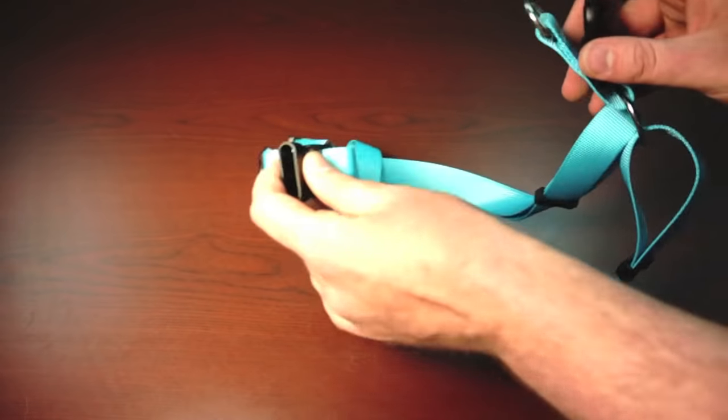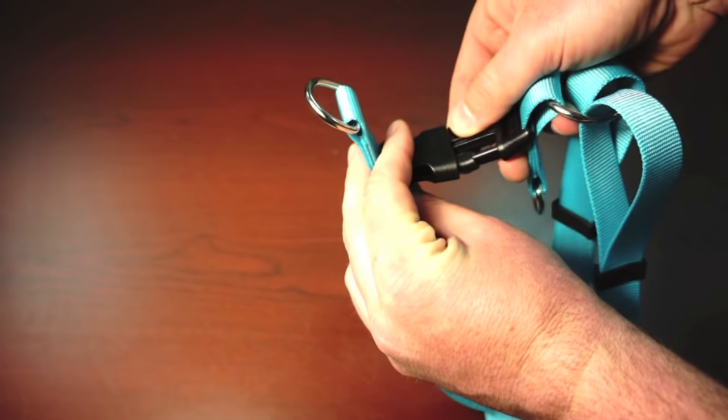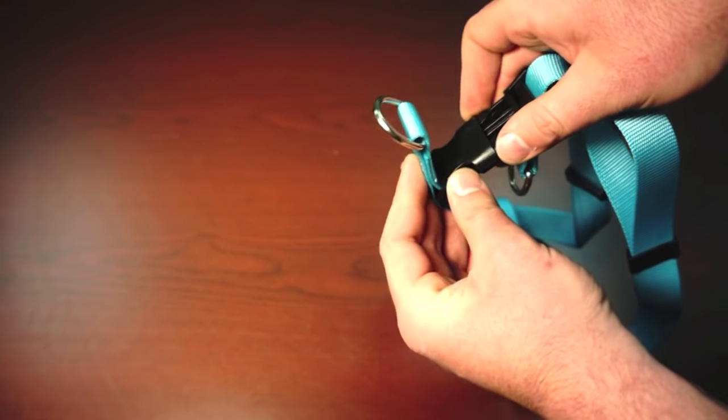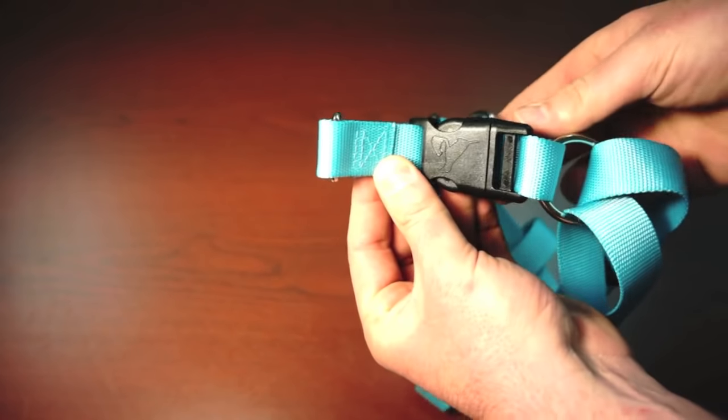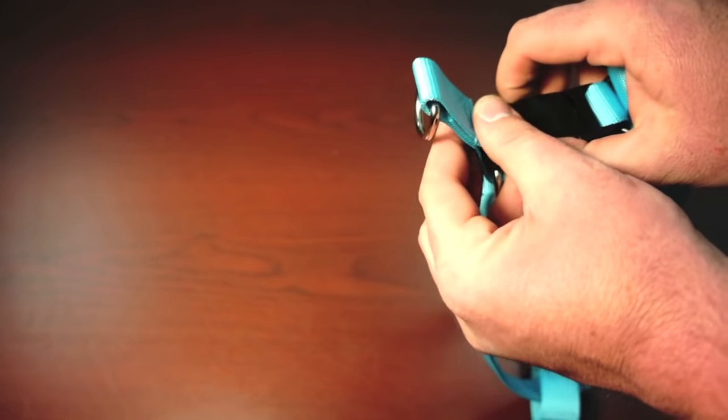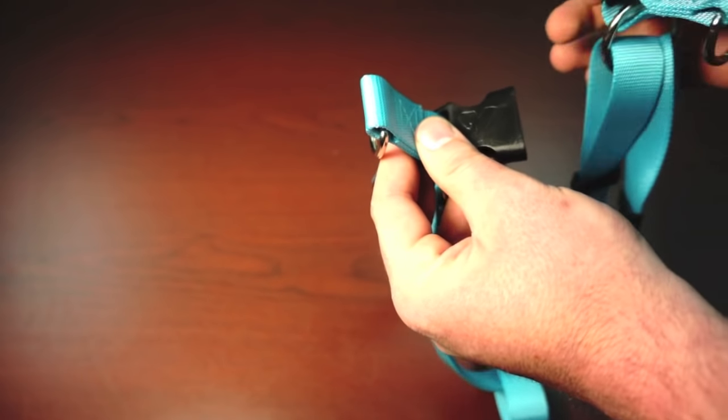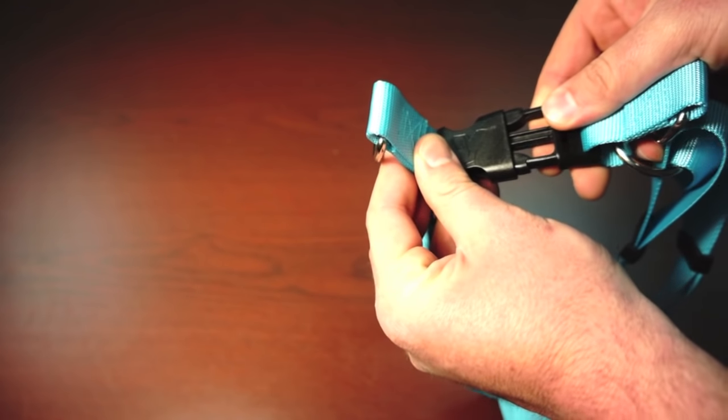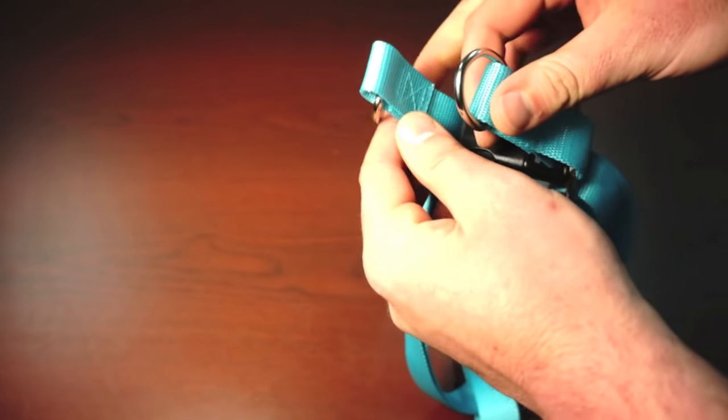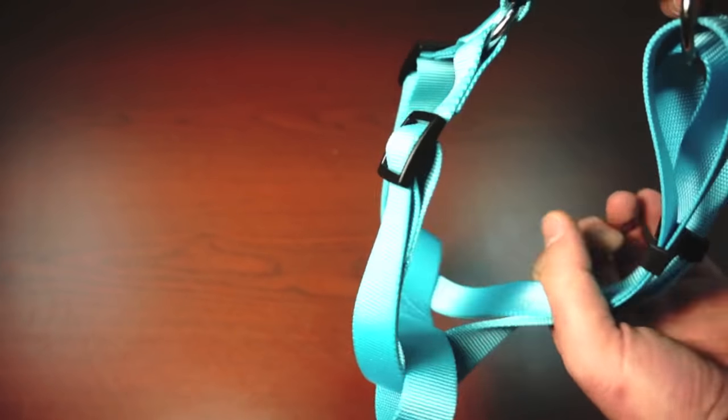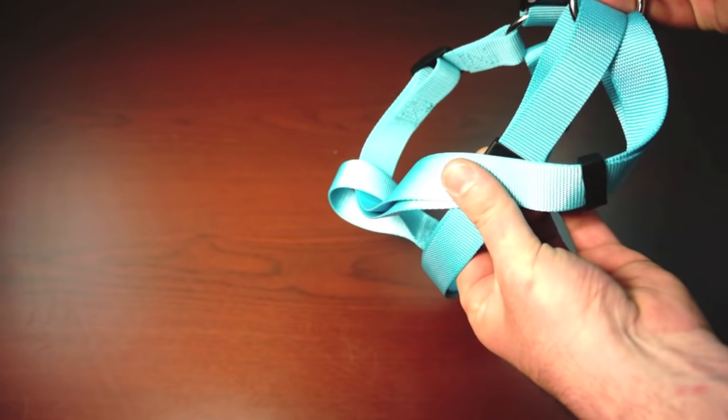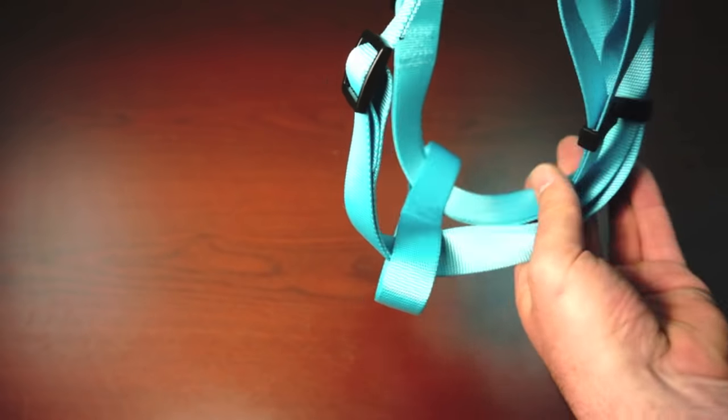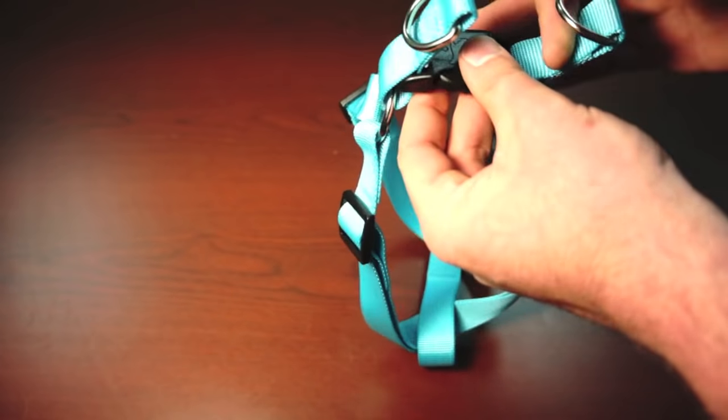So when you try to buckle, it buckles this way, and the D-ring is then on the bottom. Or, if you flip this over so that the D-ring is on the top, the harness then is significantly twisted and crossed over, and appears to not be correct at all.